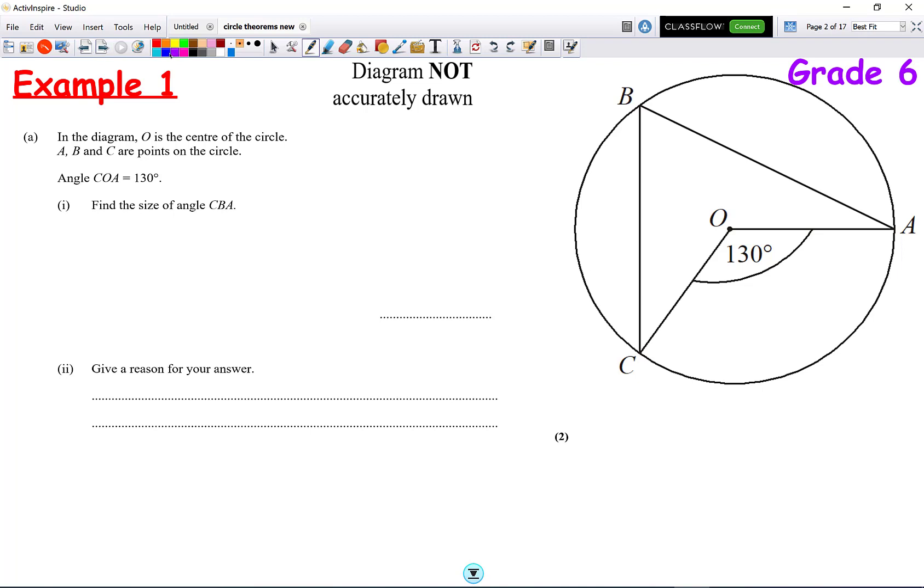So, for example, if we look at our question here, we've got the angle at the centre is 130, and then this angle at B is known as the angle at the circumference. So, this angle will always be half of 130, which is 65 degrees.